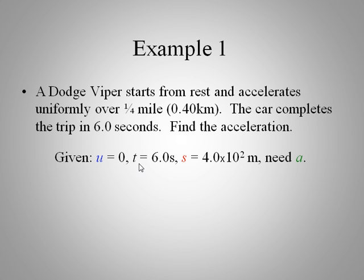So we're given the initial velocity. The time is six seconds. The displacement is four hundred meters. We need the acceleration. So we need to find an equation that we can use that has all these terms involved in it. I'll let you do that. If you want to work this out, you can pause your video.